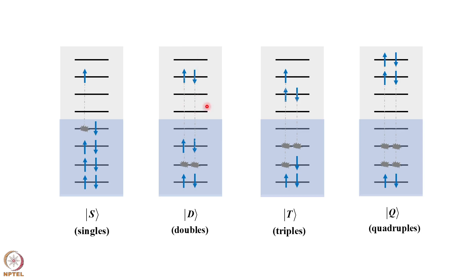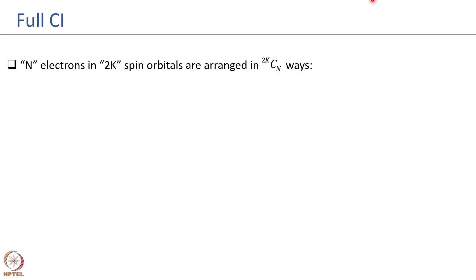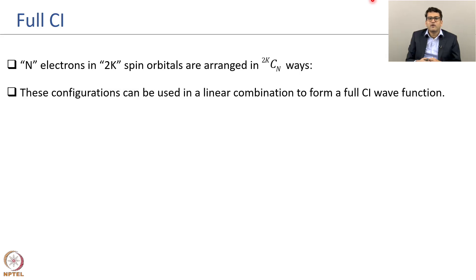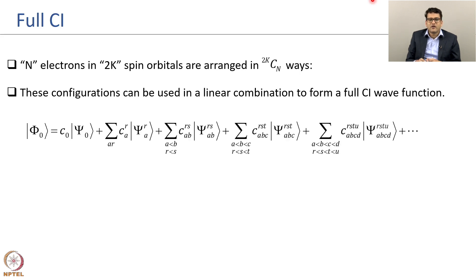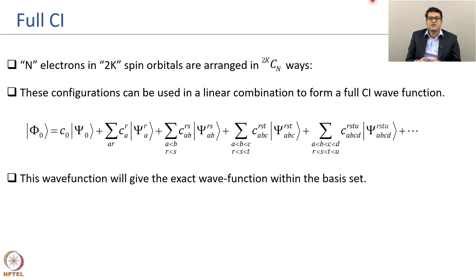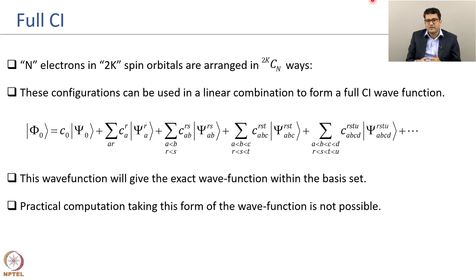Three-electron excitation leads to triply excited configurations, and four-electron excitation leads to quadruply excited configurations, and so on. When you take all possible configurations obtained by arranging n electrons in 2k spin orbitals in C(2k, n) ways, this linear combination forms the full CI wave function, as it includes all possible configurations from distributing the electrons. This wave function gives the exact wave function within that particular one-electron basis set, which is why full CI is so important.